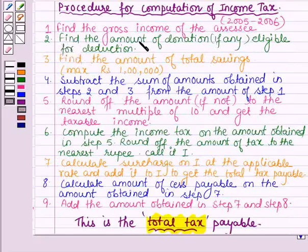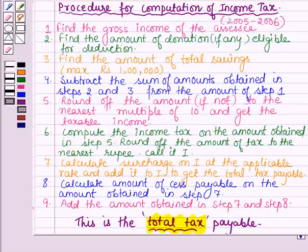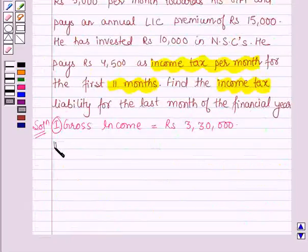The next step is to find the amount of donations, if any, eligible for deduction. Since Madan Lal did not make any donations, we move on to the third step, which says: find the amount of total savings, maximum up to rupees 1,00,000. So the third step is to find the total savings.